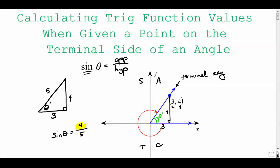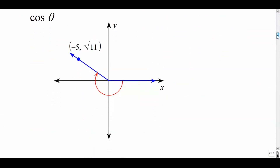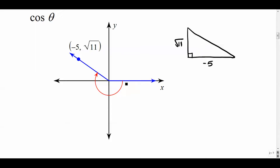So the final answer is four over five. Next example: the x value is negative five and the y value is radical 11, and we are asked to find the cosine of that angle. The angle goes into the second quadrant.